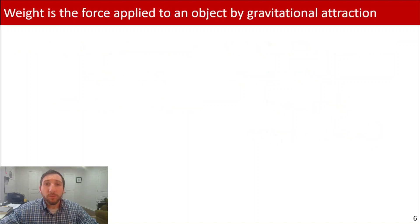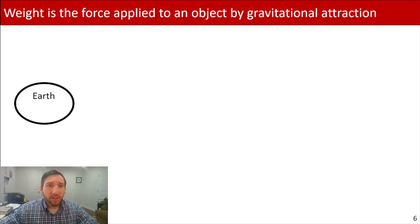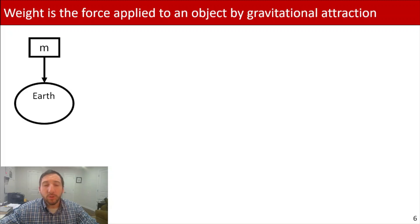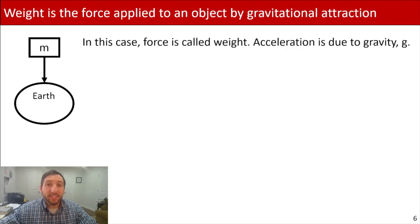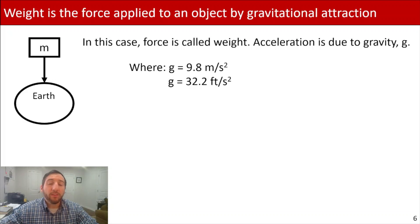I want to talk a little about weight to clarify a couple of things. Weight is the force applied to an object by gravitational attraction. Visually, if you have the Earth and a block of mass m, the Earth applies a gravitational attraction — it pulls that block toward the Earth — and that force is your weight. The acceleration in this case is due to gravity, g. If you're using metric units, gravity is 9.8 meters per second squared. If you're using the American engineering system, US customary, or imperial units, it's 32.2 feet per second squared.